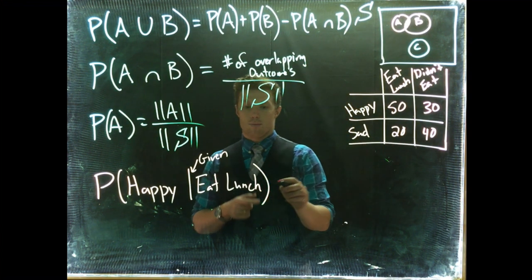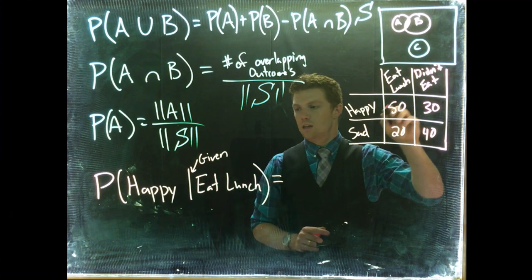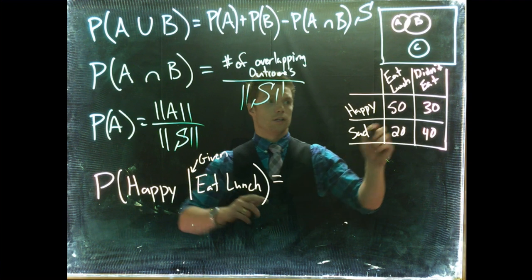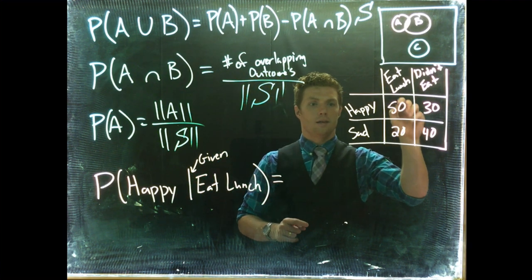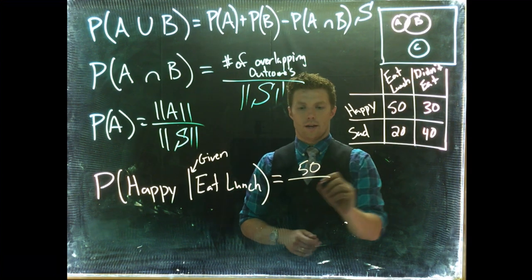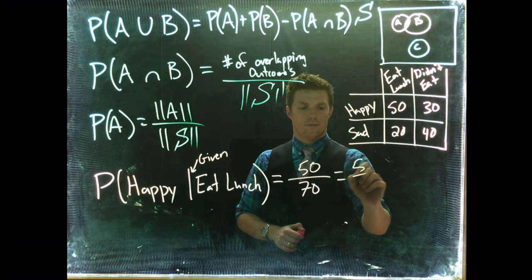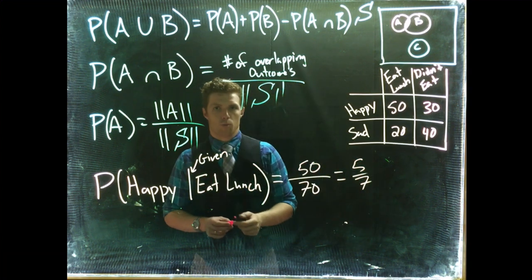So the probability of being happy given that we have eaten lunch is going to be the number of outcomes that we're interested in. So this is our happy, which is 50, and of all people who have eaten lunch already, it is 70. So we'd have five sevenths as our probability.